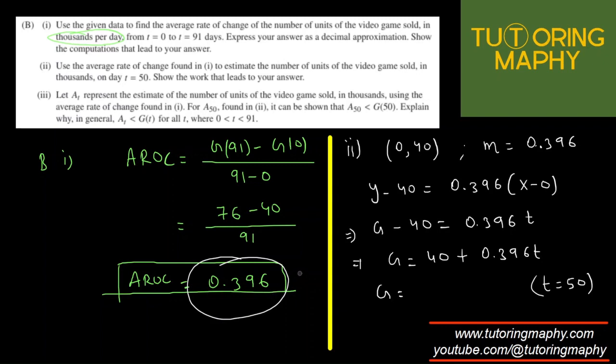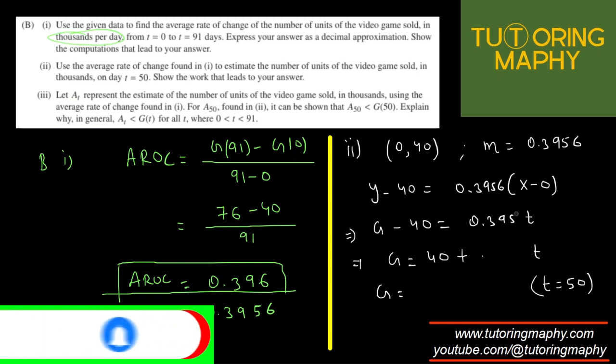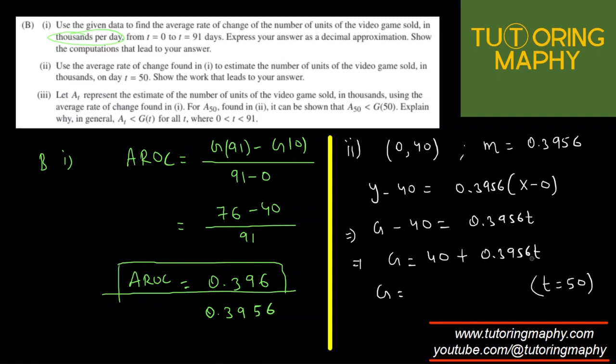Actually, although my answer is in three decimals, I'm going to use four decimals here, because this is an intermediate calculation. So AROC actually was coming as 0.3956. That's what I'm going to actually use over here. So let me quickly replace this as 0.3956, and this is multiplied with 50, and then we add 40 to it.